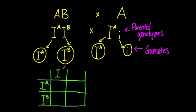From doing this you can see that there's a 25% chance of getting each genotype. There are actually four possible genotypes: IA IA, IA i, IA IB, and IB i.